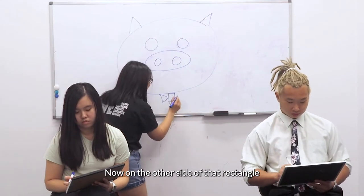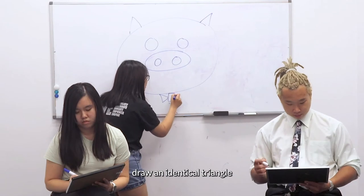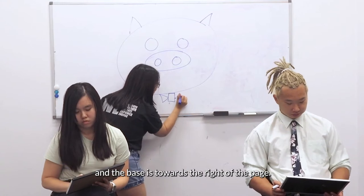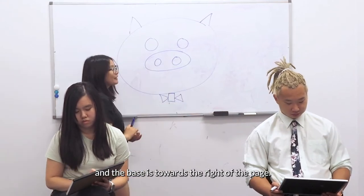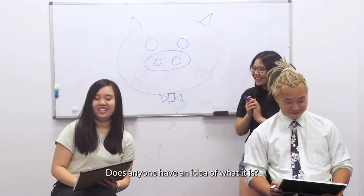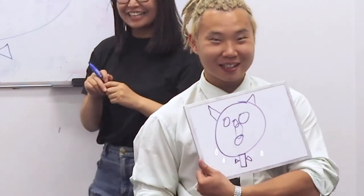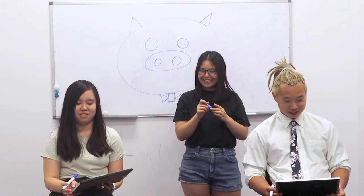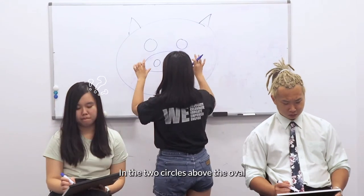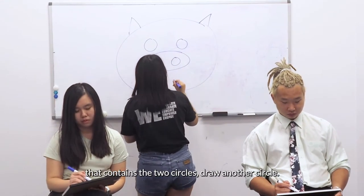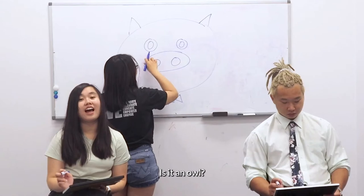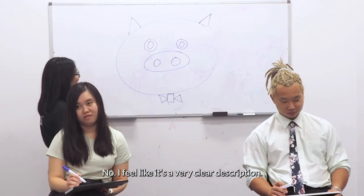On the other side of that rectangle, draw an identical triangle where the apex of that triangle is touching the rectangle and the base is towards the right of the page. Does anyone want to have an idea of what it is? What is it? A cat? It's not a cat. In the two circles above the oval that contains the two circles, draw another circle. I feel like it's a very clear description.